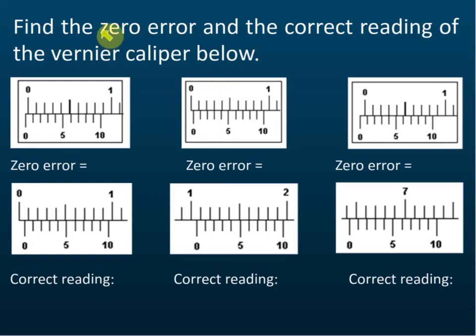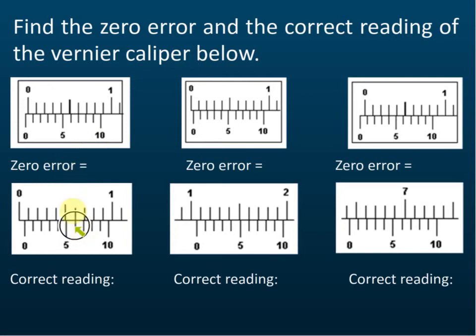Find the zero error and then find the correct reading. The correct reading is the reading minus the zero error. We must identify the zero error first.